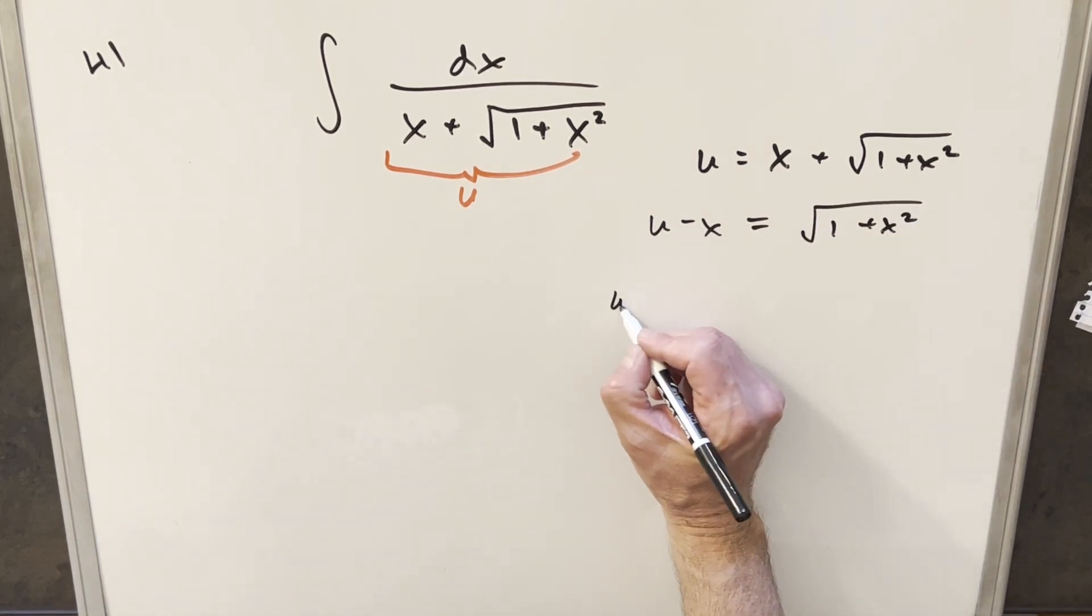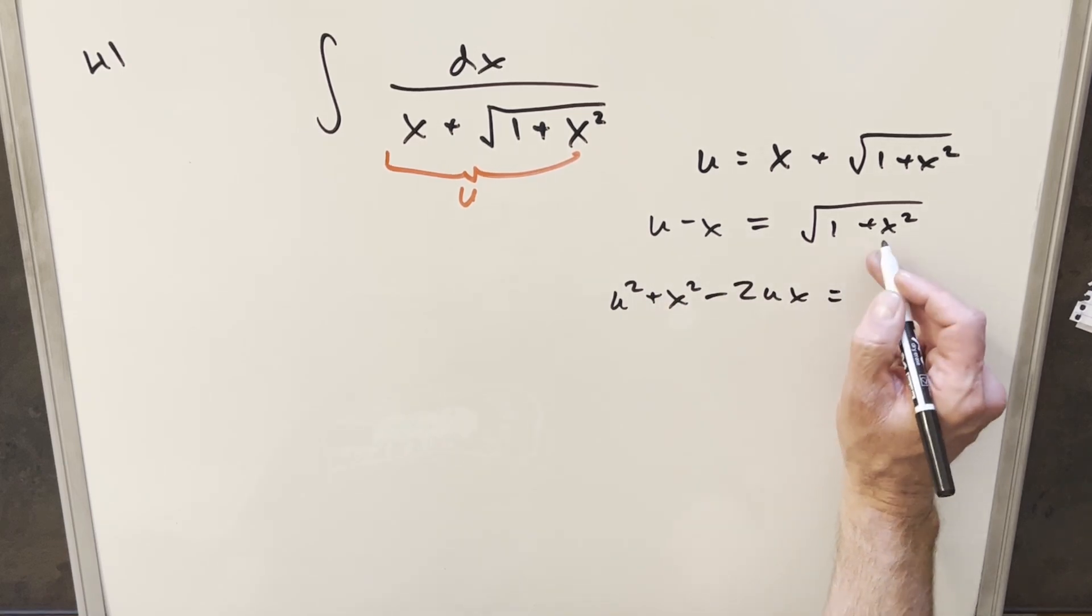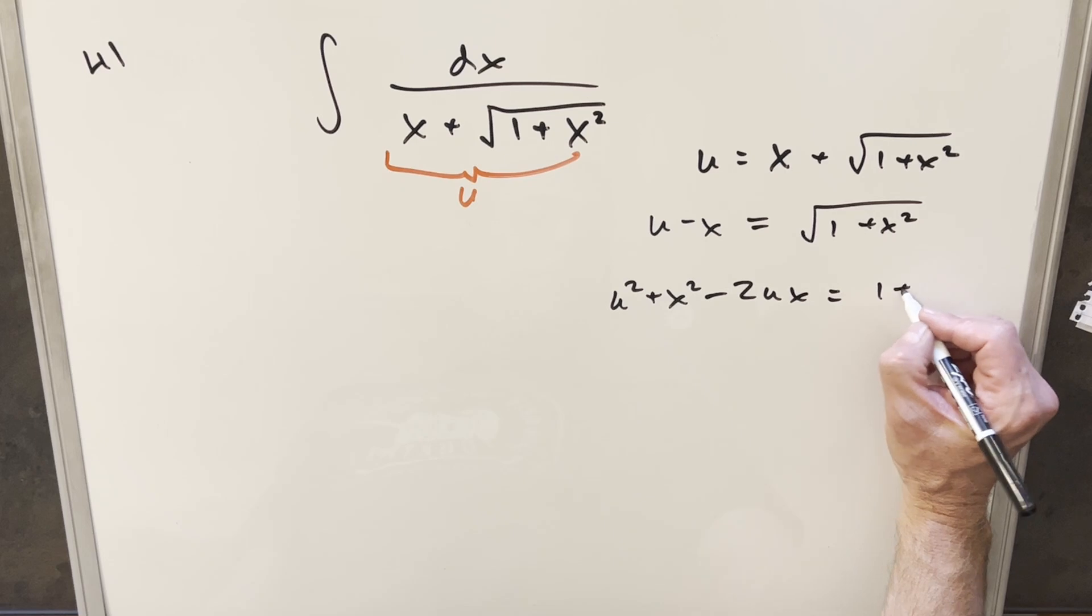Square both sides, and we have u squared plus x squared minus 2ux. And this is just going to give us what's in here. This is going to be 1 plus x squared.